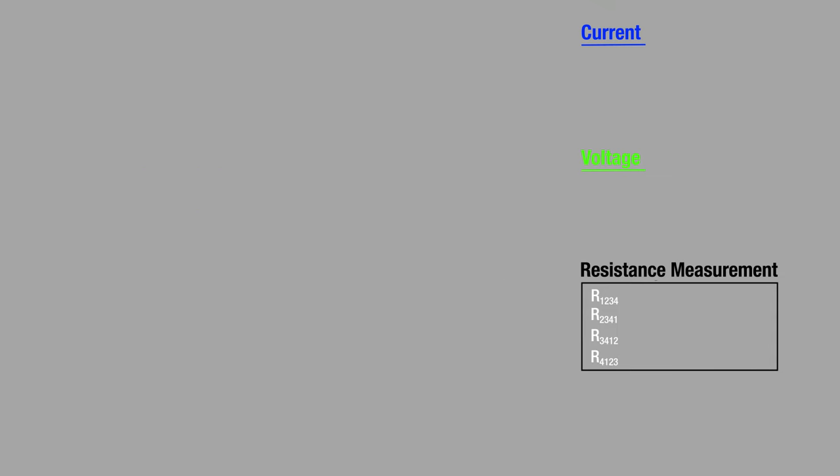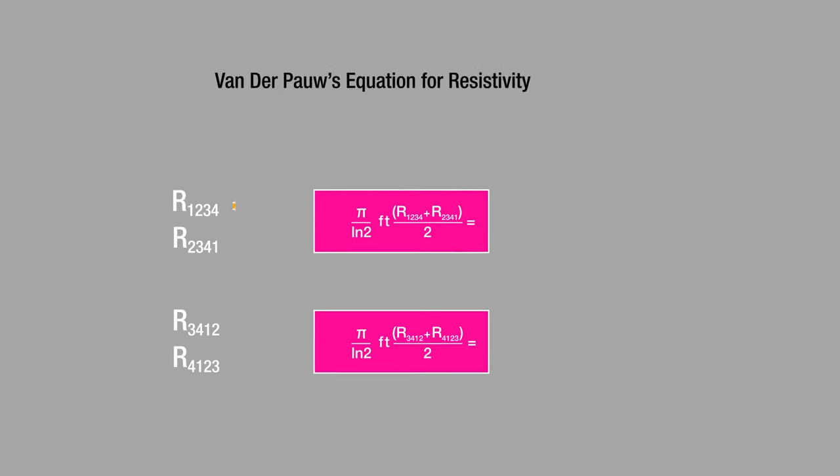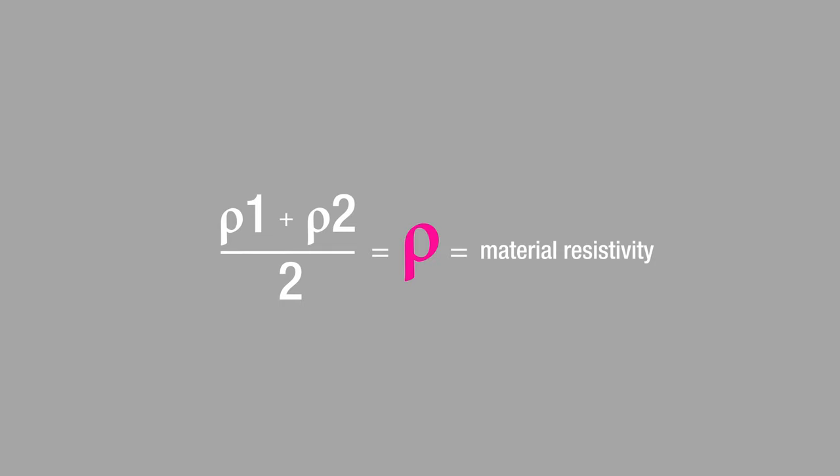Now that we have taken our measurements, some simple math allows us to determine the resistivity of the material. We take resistance 1-2-3-4, resistance 2-3-4-1, resistance 3-4-1-2, and resistance 4-1-2-3, and plug them into Vanderpaw's equation. The result will be two resistivities, rho one and rho two. The average of these two resistivities will be considered the material resistivity, which we will simply call rho.